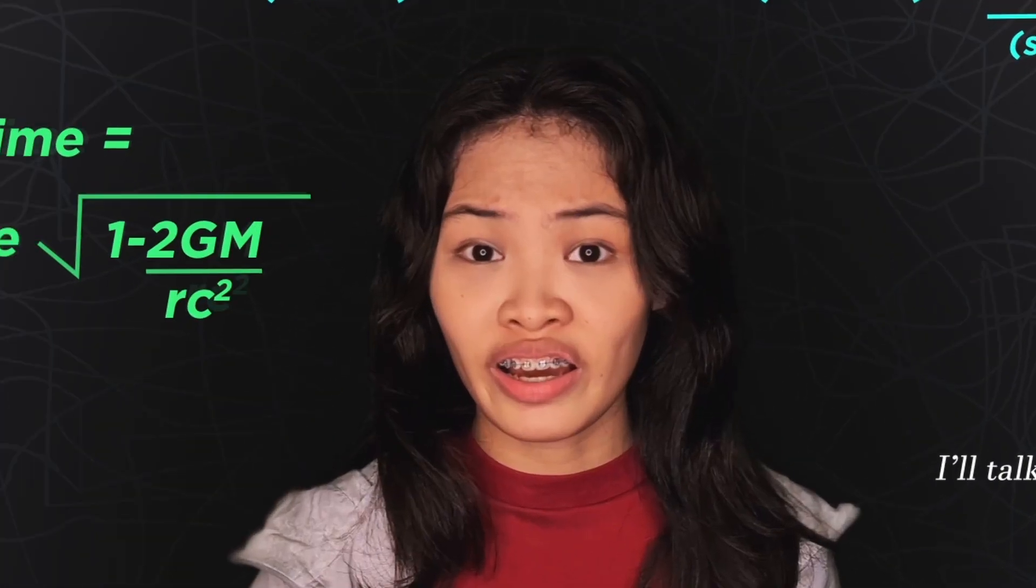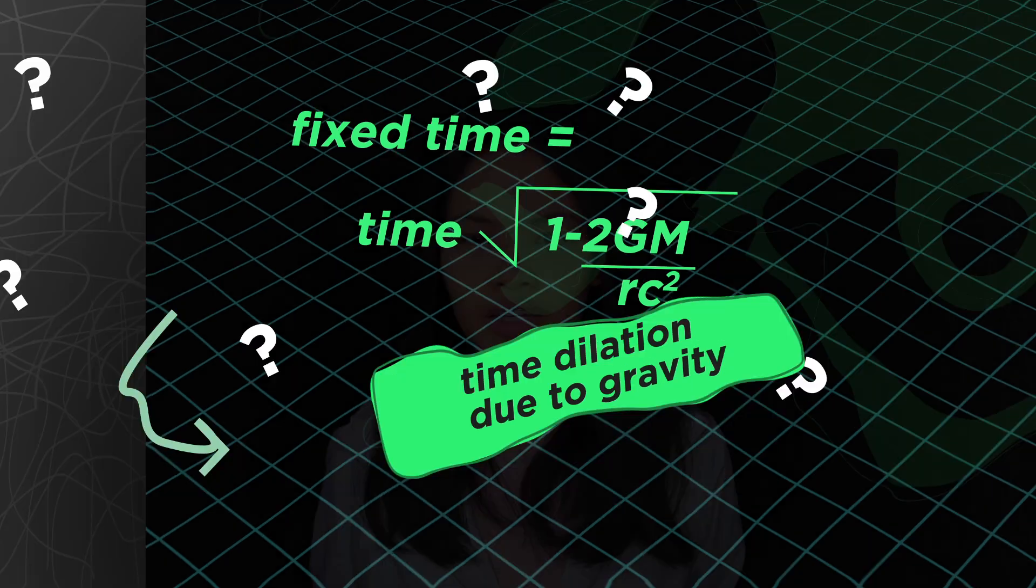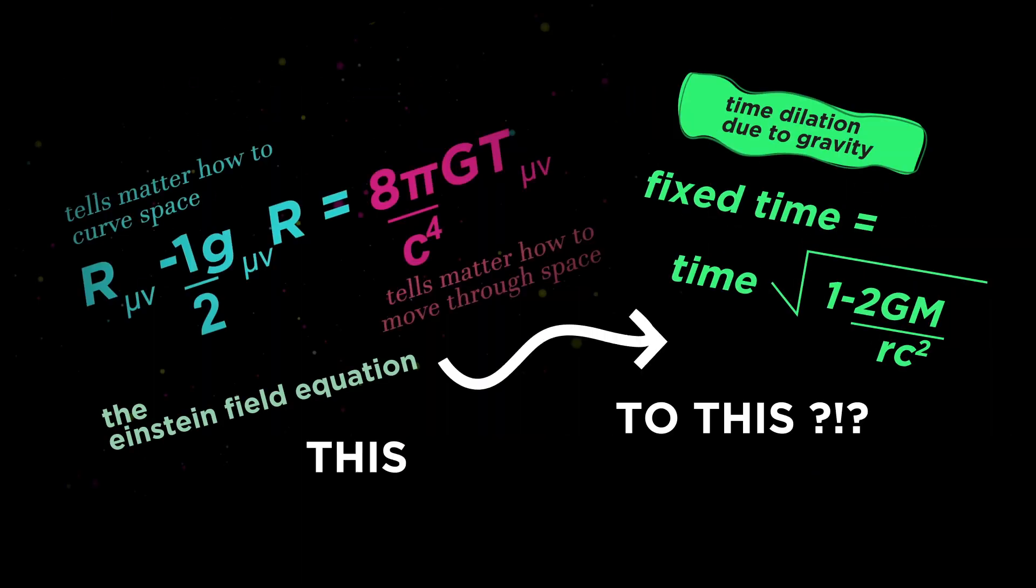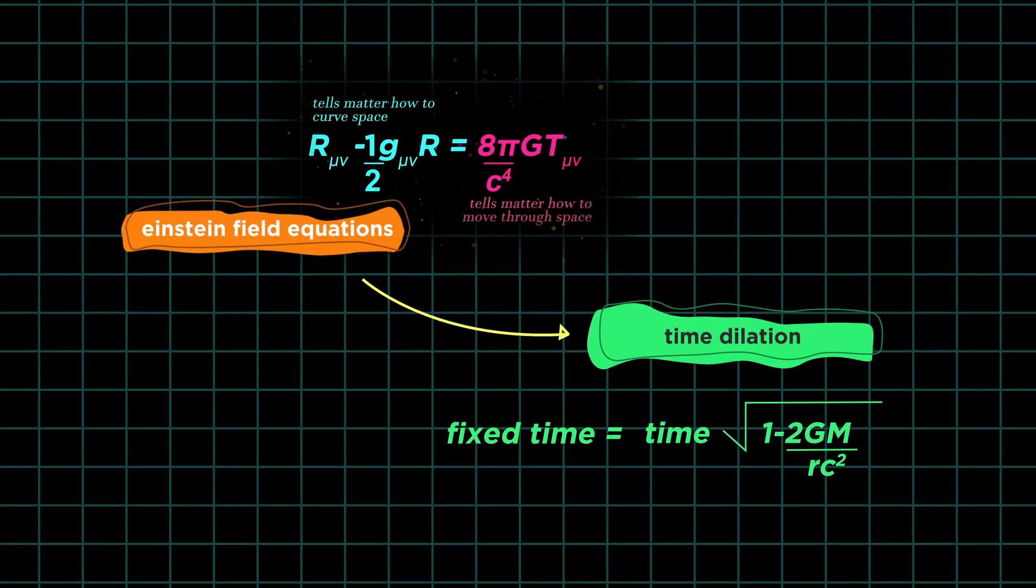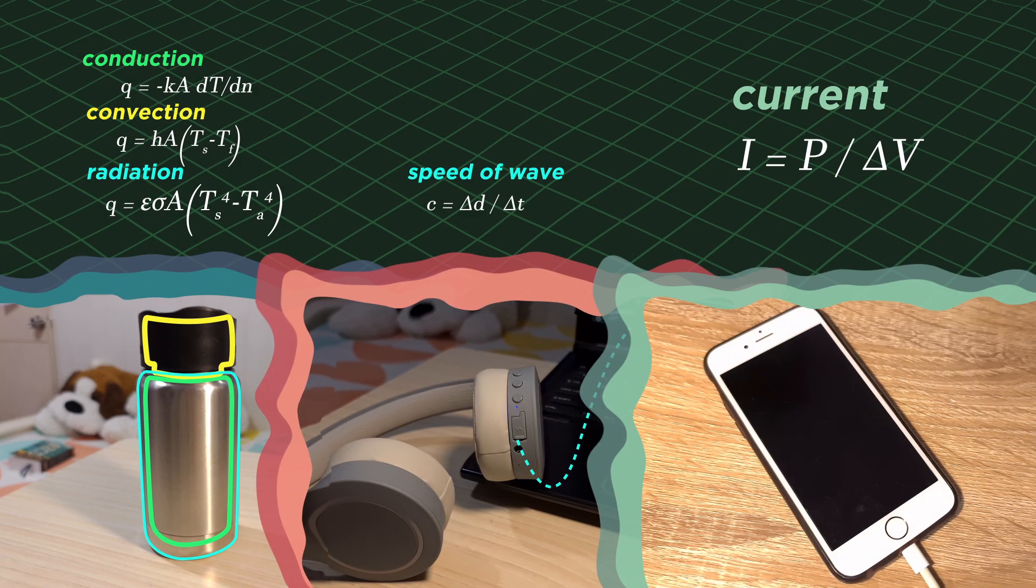This equation - where does it even come from? Weren't we talking about general relativity which looks like this? Well, this equation is actually a child of Einstein's general relativity. And that's just one out of the so many equations we use to make our lives easier.